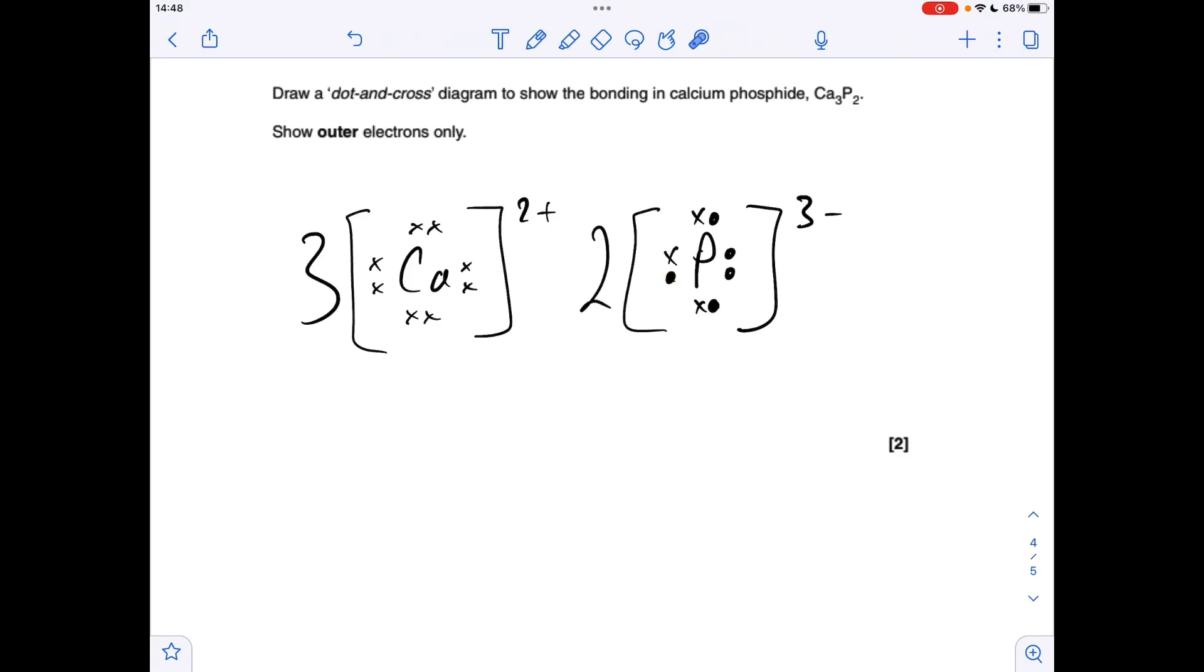So black circles, because I've used the crosses for the metal. There's the 3 electrons from the calcium, 3 minus charge.